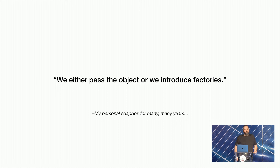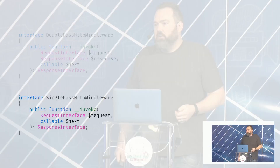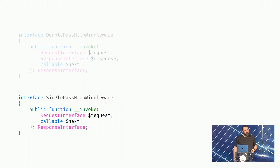So we came back to the same problem: we either need to pass the response object to the middleware, or we introduce factories. Factories was actually the decision the team made. The problem was we didn't want to do factories inside the middleware and server-handling PSR — PSR-15 was already in place. The decision was made to hold off on actually defining the factories until after PSR-15 was done, but to design PSR-15 with the assumption that the factories are going to be created. That allowed the PSR-15 working group to make the decision to go with single-pass middleware, because it really does make more sense to just get a request and return a response.